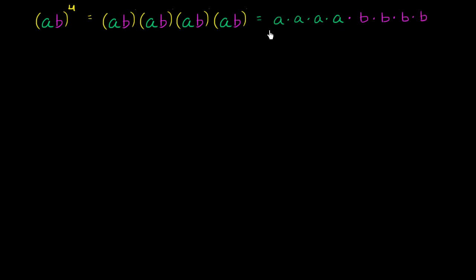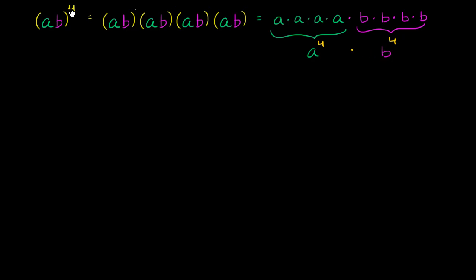And what does that equal to? Well, this right over here is a to the fourth power, and this right over here is b to the fourth power. So if you take the product of two numbers and raise them to some exponent, that's equivalent to taking each of the numbers to that exponent and then taking their product. And here I used the example with four, but you could do this with any exponent — this property holds.